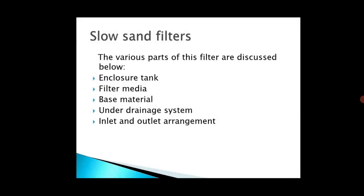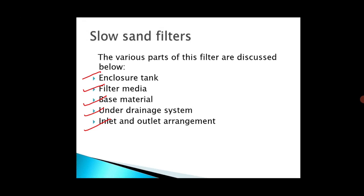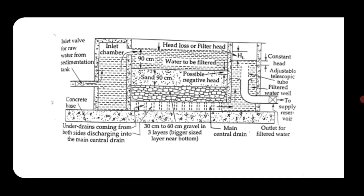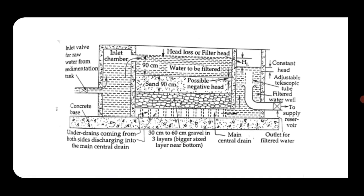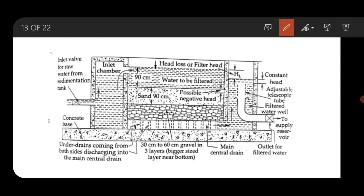A slow sand filter has several parts: enclosure tank, filter media, base material, under drainage system, and inlet and outlet arrangement. We will discuss each in brief. The enclosure tank is an open-air, watertight rectangular tank made of masonry or concrete.